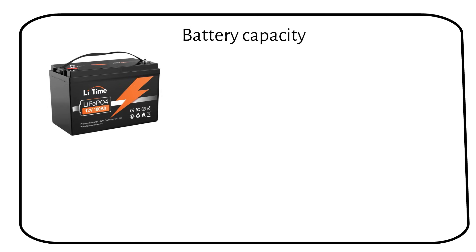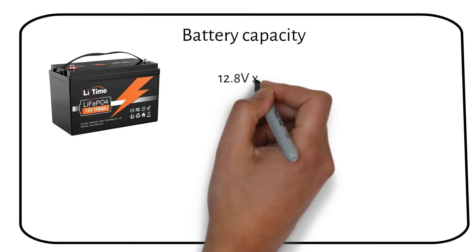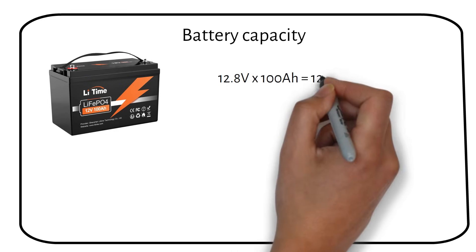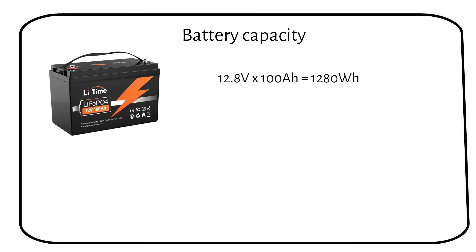Now we have to calculate how much power a lithium battery holds. We take the nominal voltage of the battery and multiply it by the 100 amp hour capacity. We have 1280 watt hours of usable energy.